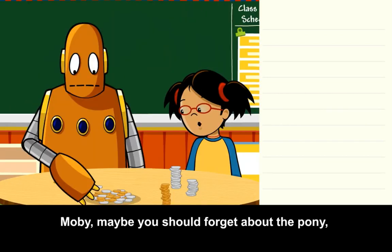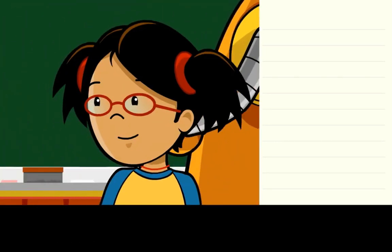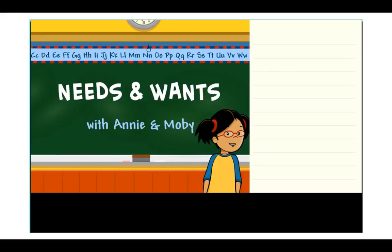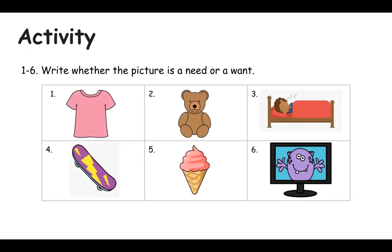Moby, maybe you should forget about the pony and save up to buy Grandpa a birthday present too. Now that you've learned about needs and wants, how people have different needs, and how they can get what they need, it's time for your activity. I would like for you to label your paper one through six, and on numbers one through six, I would like for you to write whether the picture is a need or a want. Look at the pictures and think: is this something I need to survive, or is this an example of something that I want?